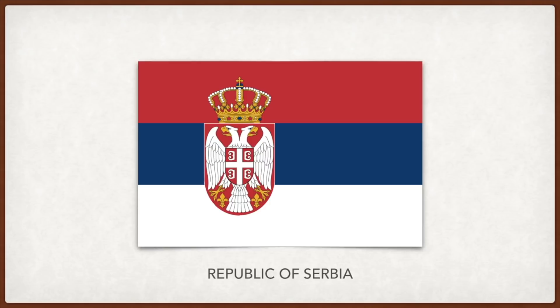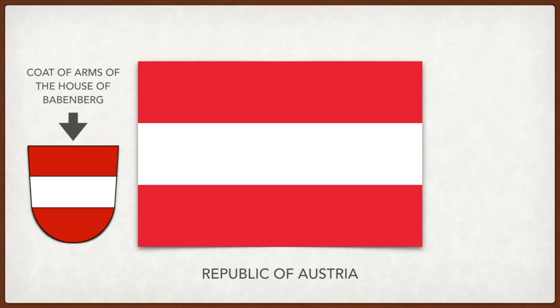Austria: the flag traces back to the coat of arms of the medieval Babenberg dynasty. Legend has it that Duke Leopold V of Austria invented it when, after a battle, his white coat was completely drenched in blood — but when he removed his belt, the cloth underneath was white, so he took this as his flag.